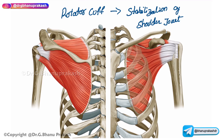To remember the rotator cuff muscles, use the mnemonic SITS — S, I, T, S. Notice that the T is a small alphabet, indicating teres minor rather than teres major. So the four muscles are: S = supraspinatus, I = infraspinatus, T = teres minor, and S = subscapularis.